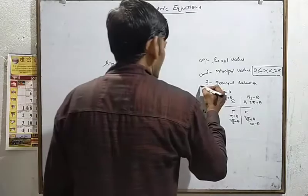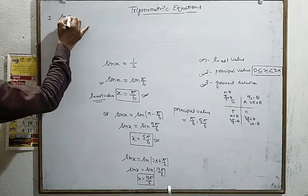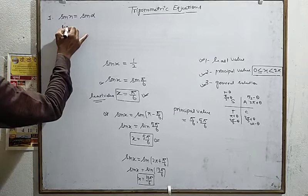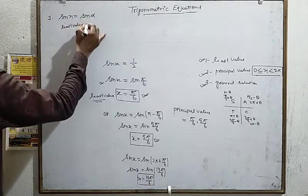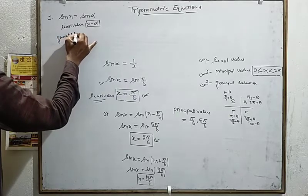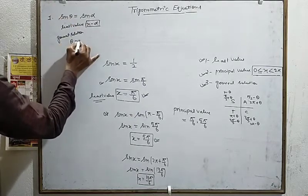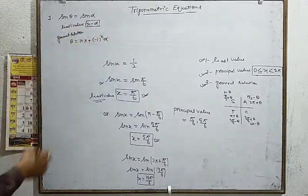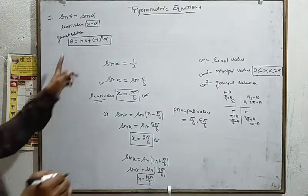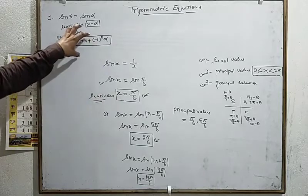Now we have the general solution. For the general solution, we have formulas. Formula number one: if sin x = sin alpha, then the general solution is x = npi + (-1)^n * alpha. This is the general solution when a value is in terms of sine. This general solution contains all values.